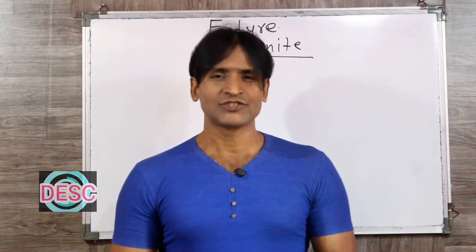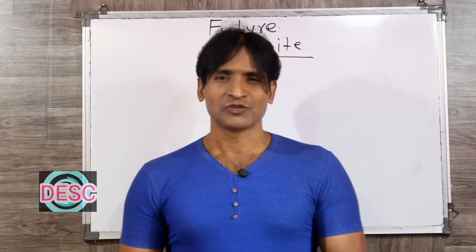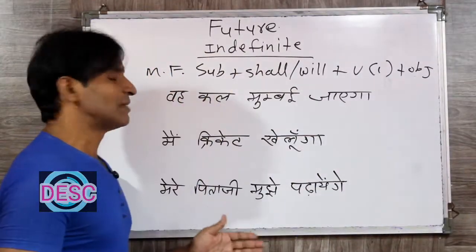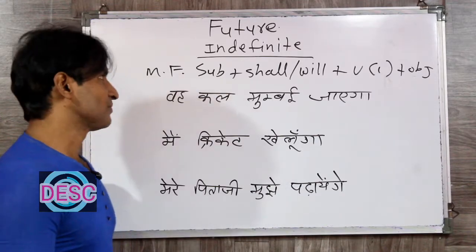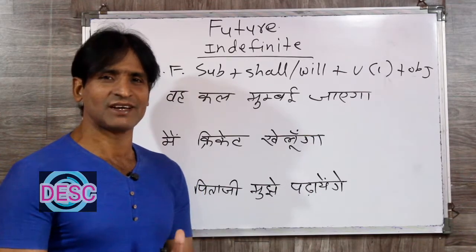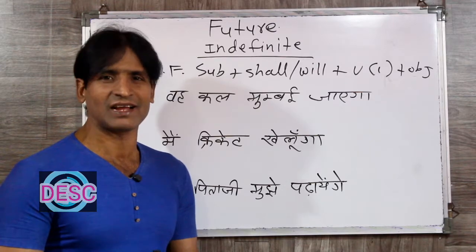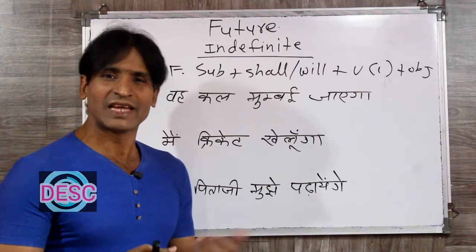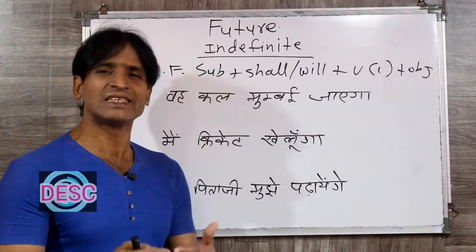Friends, from today we are starting future indefinite tense. Let's start. I have written the making formula and definition. The identification is very simple — ga, gi, ge comes at the end of the sentence. Whenever at the end of a sentence, after the verb, you see ga, gi, ge — like aayega, khelega, khelunga, padhegi — gi means ga, ga, ga — then we understand that sentence is future indefinite.